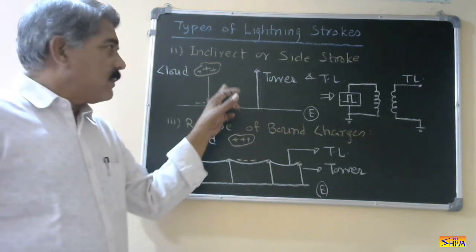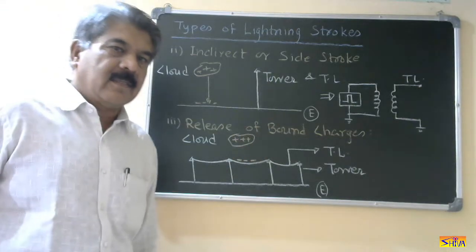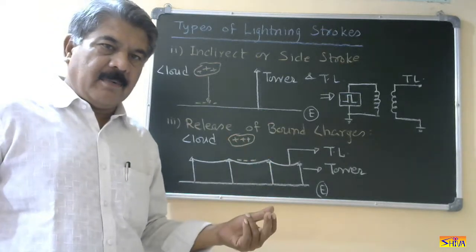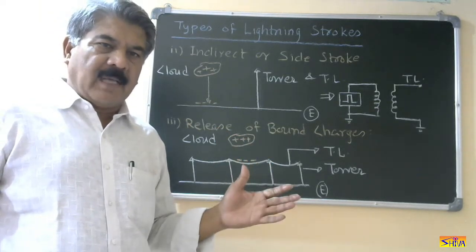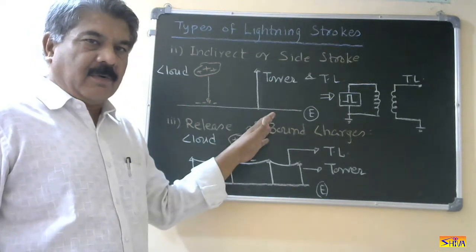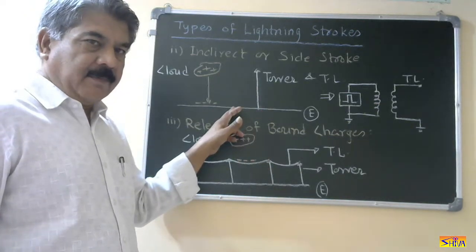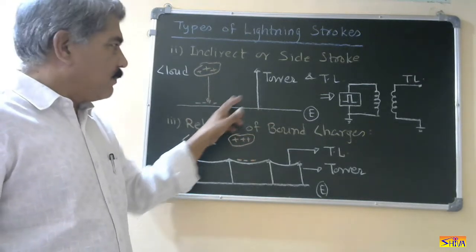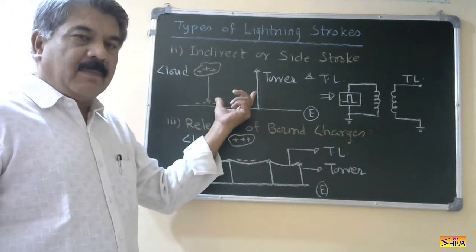The second type is the indirect stroke, also called the side stroke. An indirect or side stroke can be of Type A or Type B in mechanism, but it is not on the power system equipment, transmission line tower, or transmission line. It is near to the transmission line or near to the transmission line tower. In this case, the cloud discharges and the medium between the cloud and the transmission line is air.